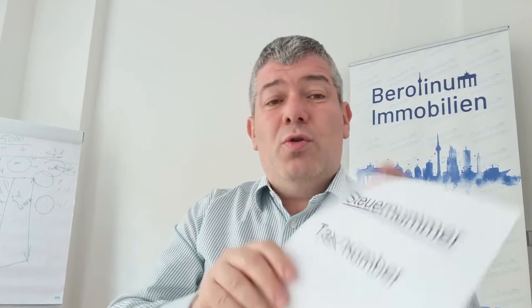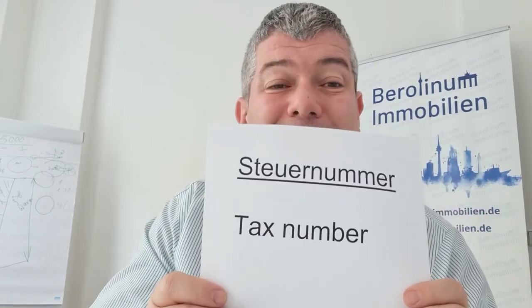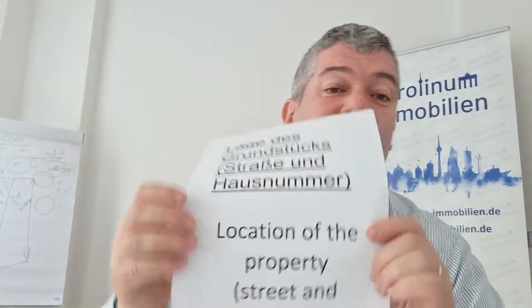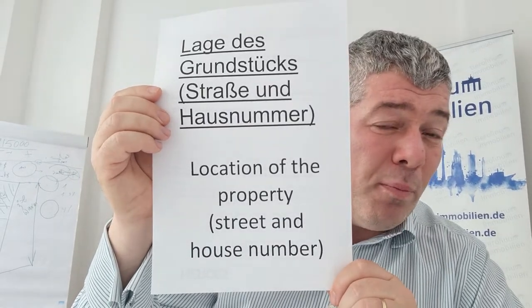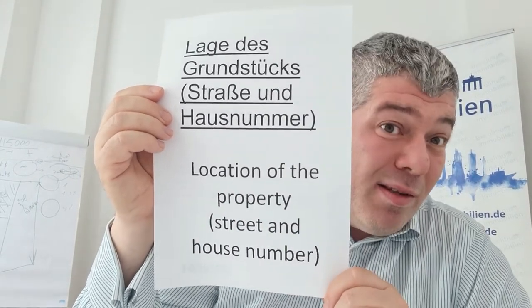What information do you need to deliver? First of all, information about you and your tax number. Then you need to deliver information about the location of your property — its address: street, house number, postal code, and city.